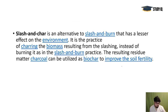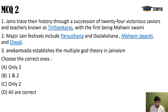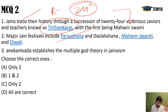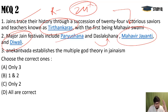Next topic: Jainism and Buddhism. One or two questions on their philosophies are asked every year in the UPSC preliminary examination. Jains trace their history through a succession of 24 victorious saviors called Tirthankars. The last was Mahavir Swami — the 24th — while the first was Rishabh Dev, also called Adi Dev. Major Jain festivals include Paryushana for Shvetambaras, Das Lakshana for Digambaras, Mahavir Jayanti, and Diwali.